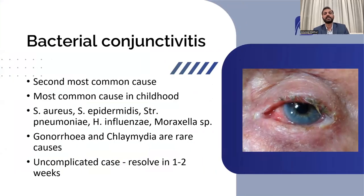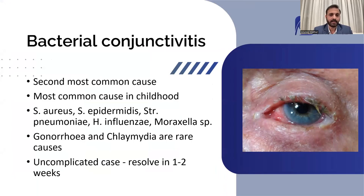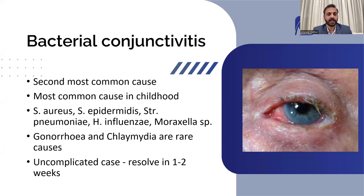Coming to the second most important category: bacterial conjunctivitis is the second most common cause of conjunctivitis overall, and in childhood it is the most common cause. Kids who go to nurseries and schools often come back home with red eyes and watery discharge, and most of these cases are conjunctivitis because of bacteria.